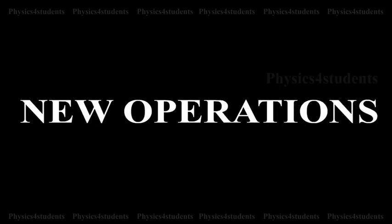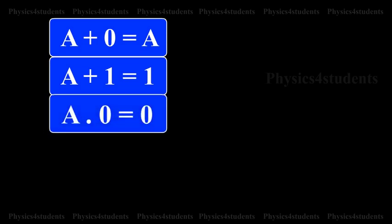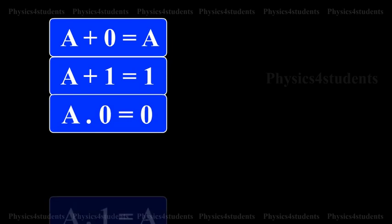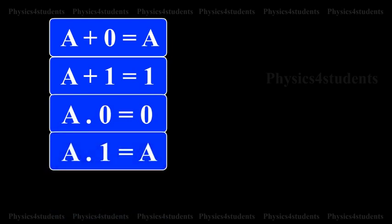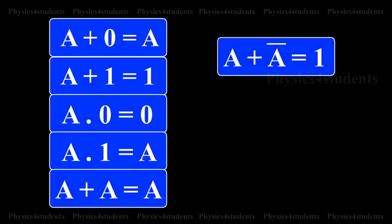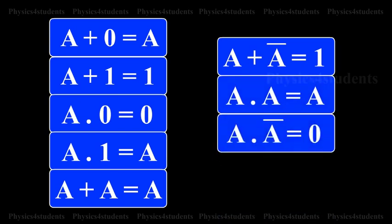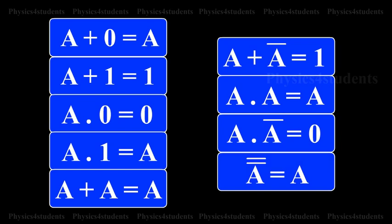New operations: A or 0 is equal to A. A or 1 is equal to 1. A and 1 is equal to A. A or A is equal to A. A or A complement is equal to 1. A and A is equal to A. A and A complement is equal to 0. A double complement is equal to A.